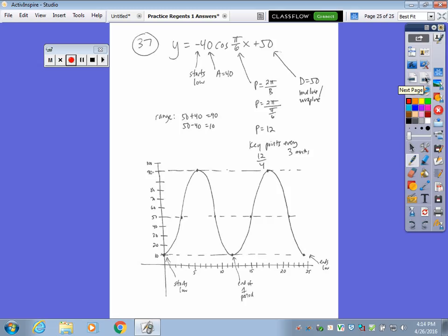The last question, a big trig graphing question. I wrote down the equation here at the top. The negative in the front means that you start low. The 40 is your amplitude. The period is 2 pi over b, which is 2 pi over pi over 6. Keep, change, flip, you get 12. So that means you have key points every three months. And your wrap line or midline or vertical shift is at 50.